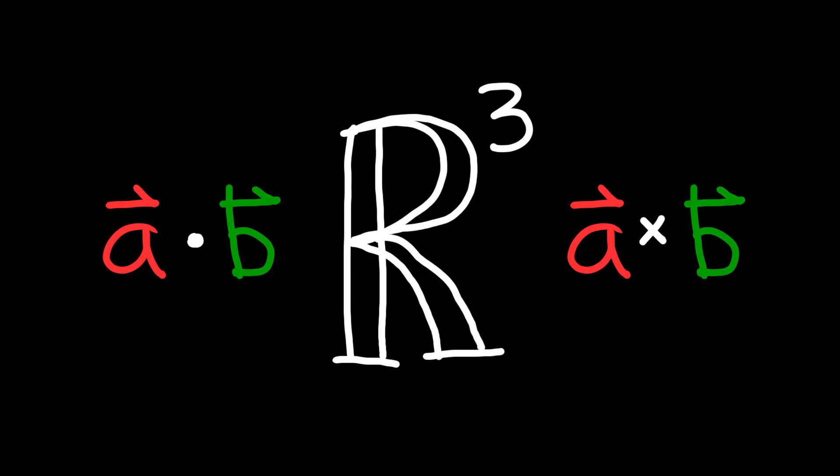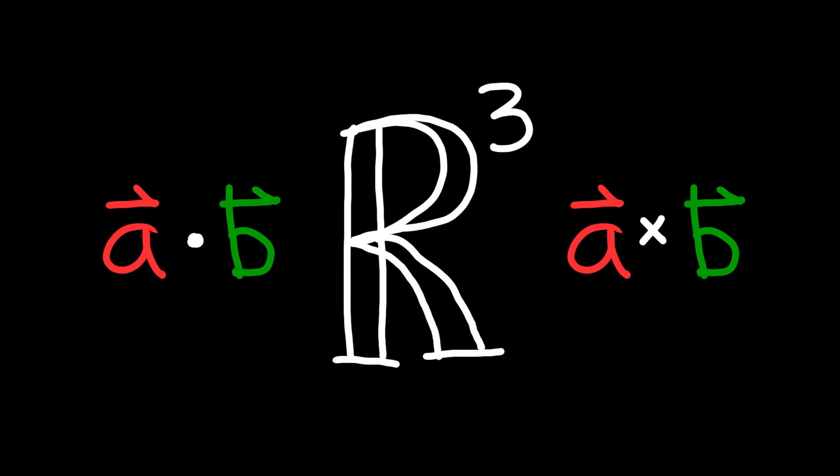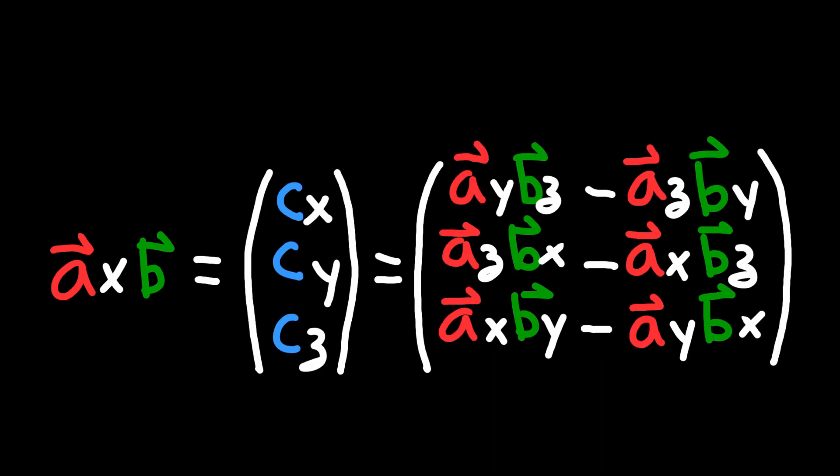The calculation for the cross product is a little bit more mathy than the calculation for the dot product. In math teacher notation, the cross product looks like this. If you want to convert that into something that you can more easily type into a computer programming language, it's going to look more like this.